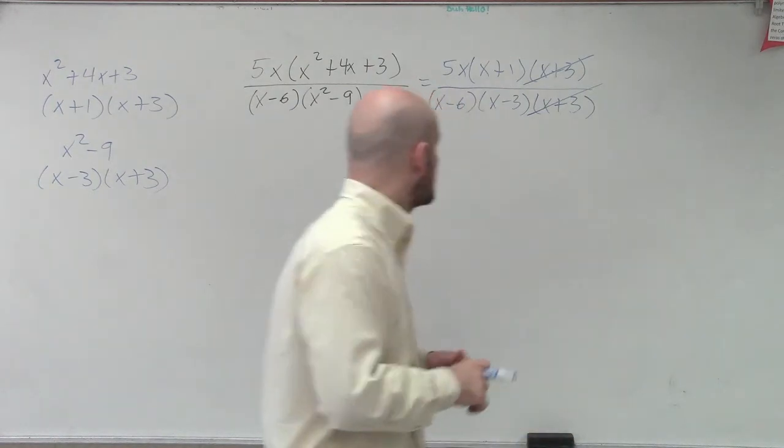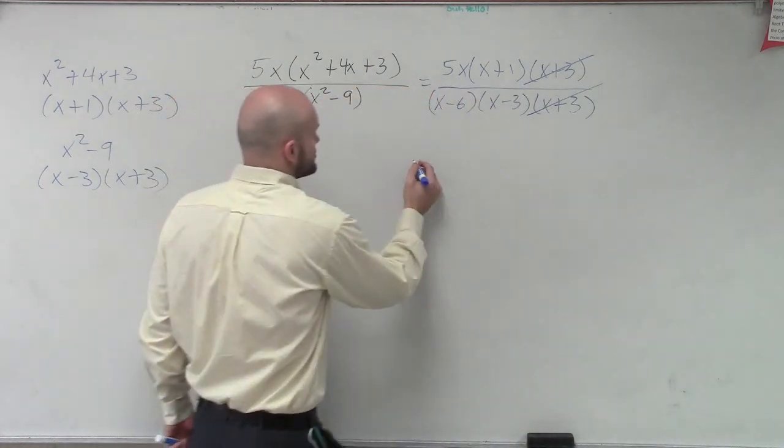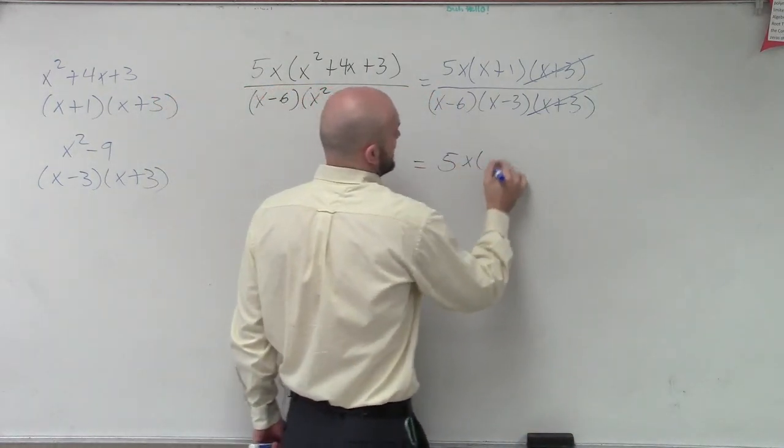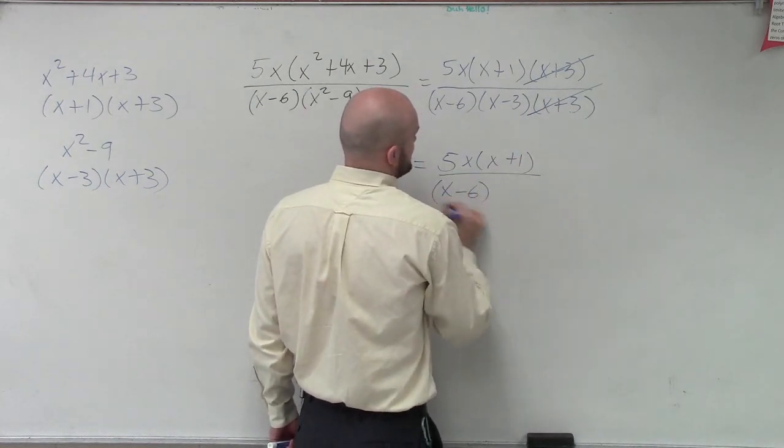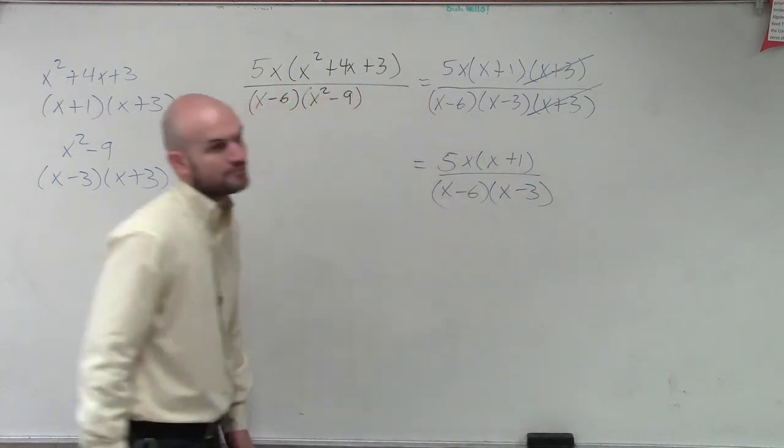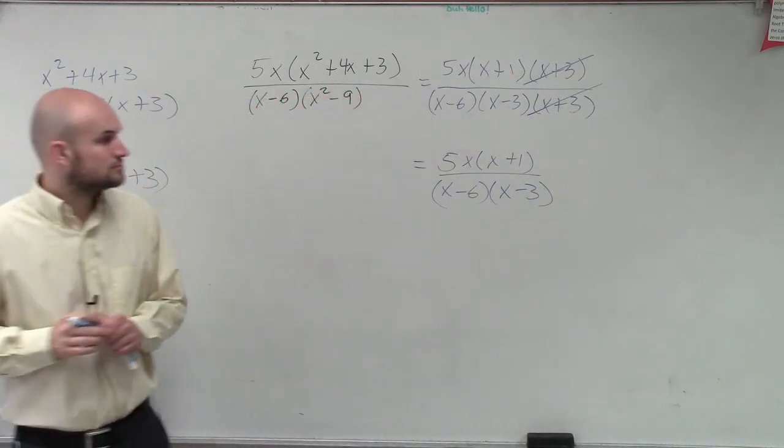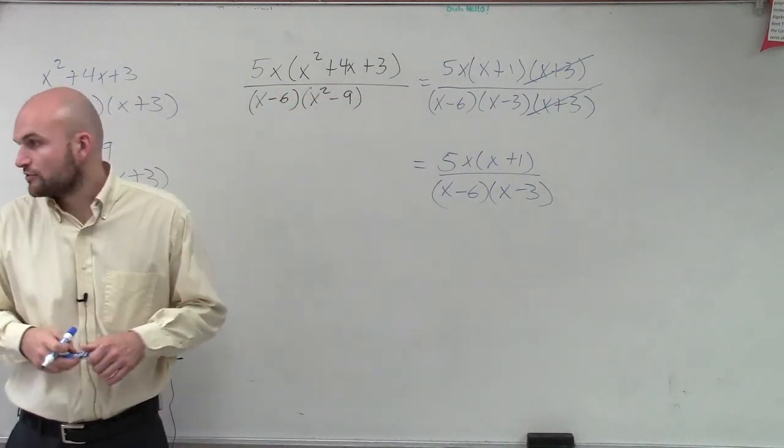And then looking at it, then we just have our simplified version, which is going to equal 5x times x plus 1 over x minus 6 times x minus 3. I mean, this is factored form, it should be fine.